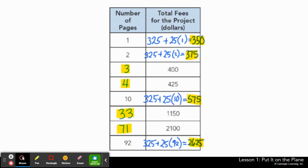Alrighty, let's compare our tables. Whatever you don't have in this table, fill it in because you will need it for the next part of this activity. So for one page, $350. For two pages, $375. $400 is for three pages. $425 is for translating four pages. 10 pages gets her $575. 33 gets her $1,150. 71 pages earns her $2,100. And 92 pages, she will receive $2,625. Take a second to copy if you need, pause here.